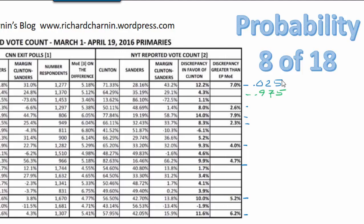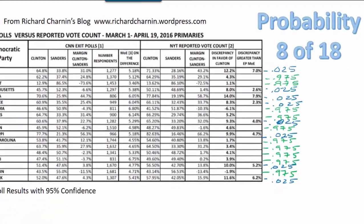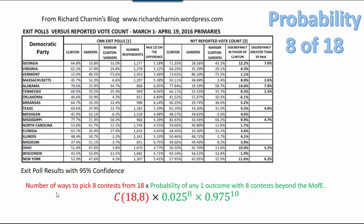What about the times that it doesn't occur? If we break this down by the probability of exceeding versus the probability of not exceeding, then for each of the cases where we didn't exceed the margin of error there's a 0.975 chance of that happening. If we multiply all of these together, we get the probability of this exact scenario — but that's not what we're looking for. We're looking for the probability of any 8 of 18 contests exceeding the margin of error.